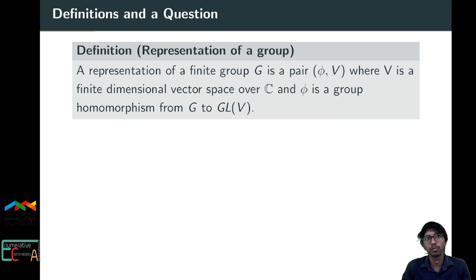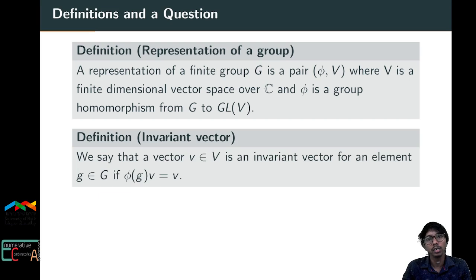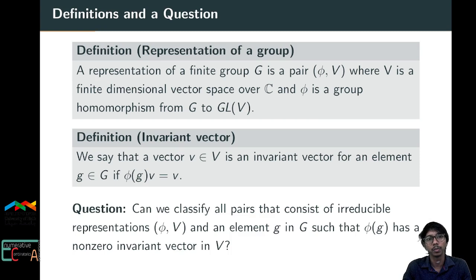A representation of a finite group G is a pair (φ, V) where V is a finite-dimensional vector space over ℂ and φ is a group homomorphism from G to GL(V). We say that a vector v in V is an invariant vector for an element g in G if φ(g) of v equals v.